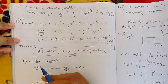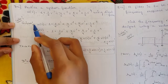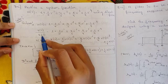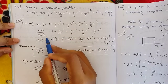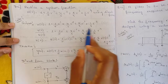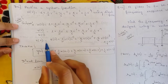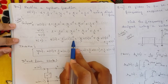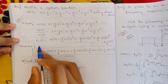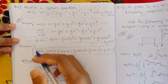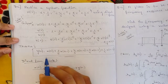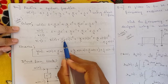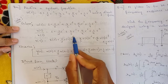To find y(n) from H(z), we use the fact that H(z) is defined as Y(z) divided by X(z). Multiply X(z) across to get Y(z) as X(z) plus 3/2 X(z) z-inverse and so on. Then take the inverse Z-transform so that Y(z) becomes y(n) and X(z) z-inverse becomes x(n-1).